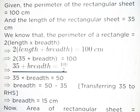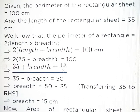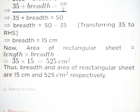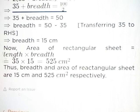Given: the perimeter of the rectangular sheet is equal to 100 cm and the length of the rectangular sheet is equal to 35 cm. We know that the perimeter of a rectangle is equal to 2 into L plus B. So 2 into 35 plus breadth equals 100 cm. 35 plus breadth equals 100 upon 2, which is 50. Breadth equals 50 minus 35, that is equal to 15 cm. Area of a rectangular sheet is equal to length into breadth: 35 into 15 is 525 cm². Thus, breadth and area of a rectangular sheet are 15 cm and 525 cm² respectively.